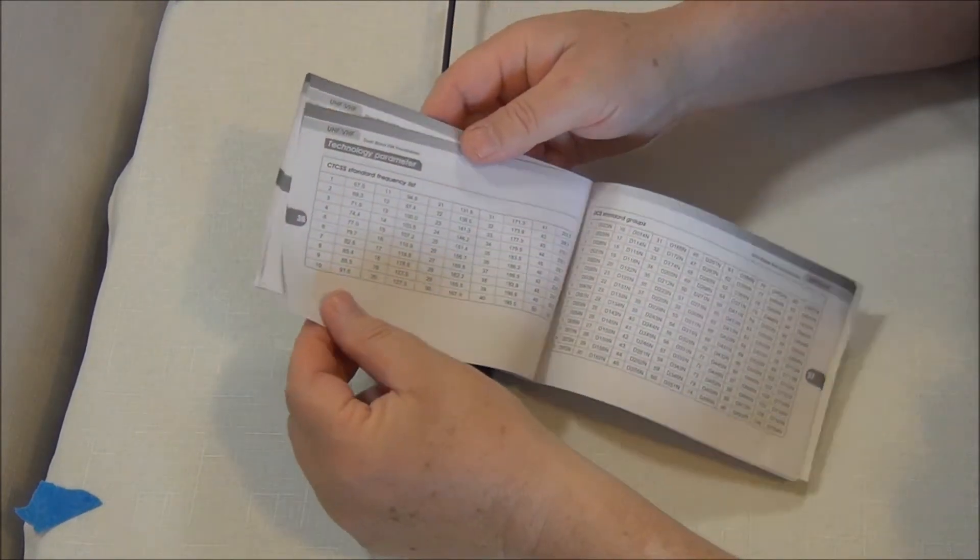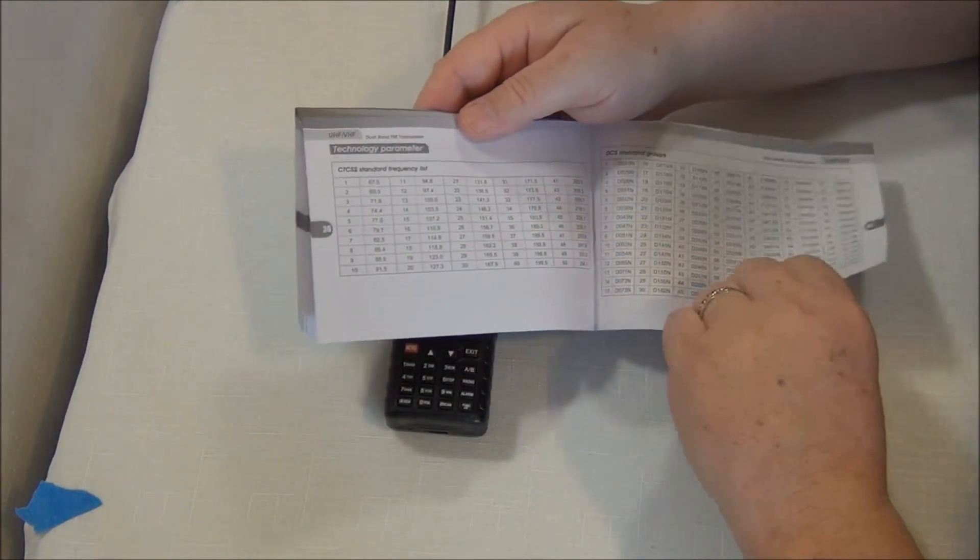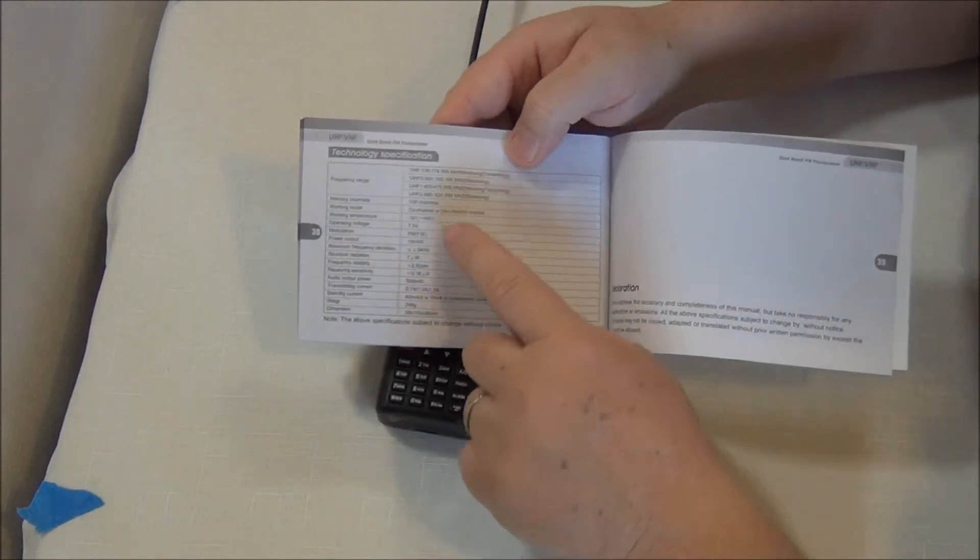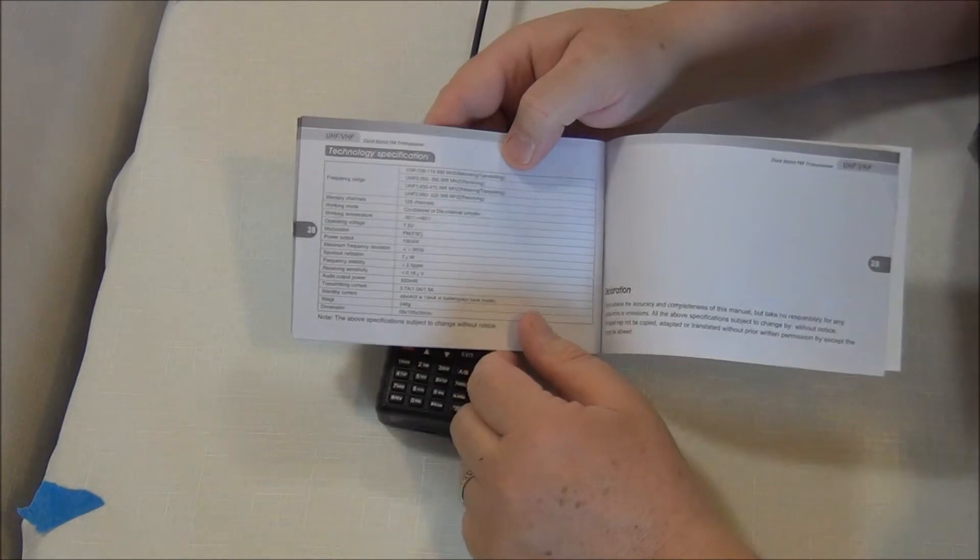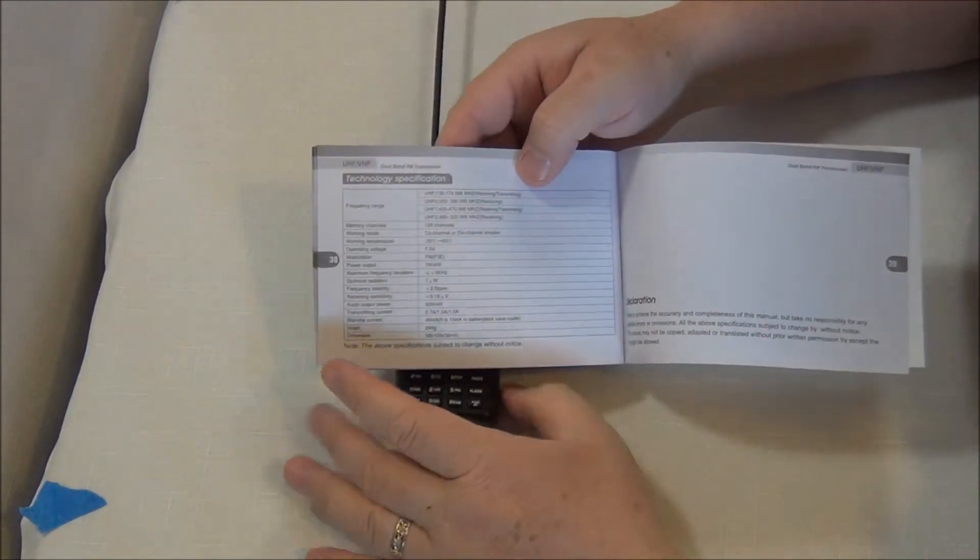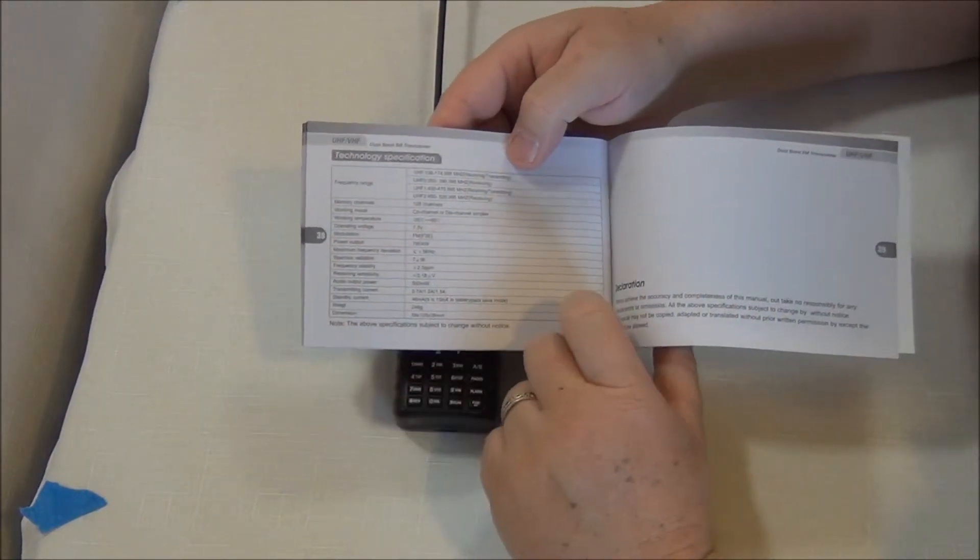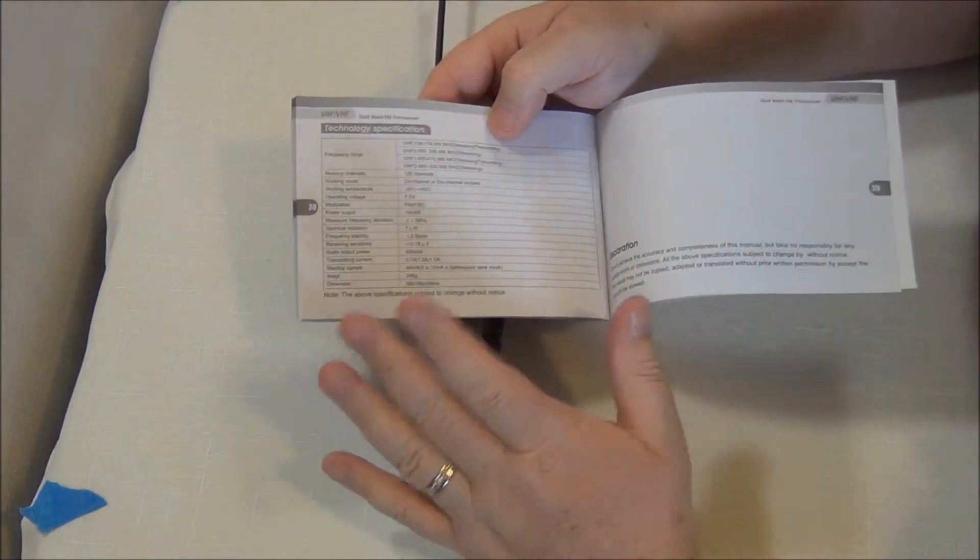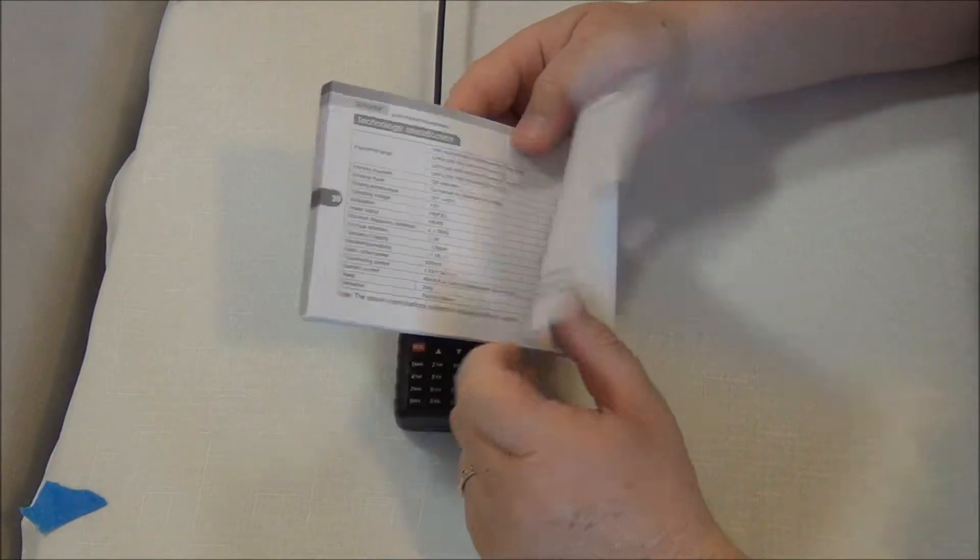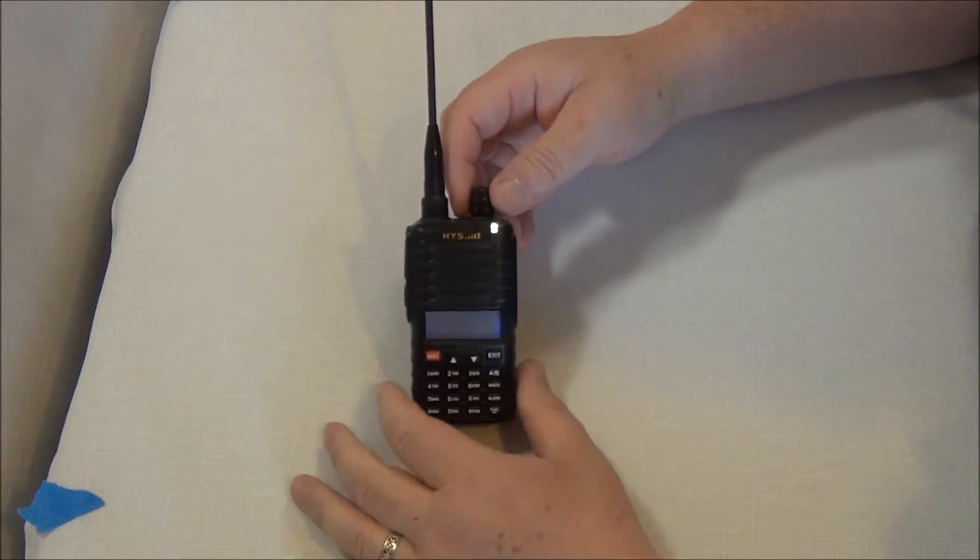That does give you a brief overview of the specifications here in the back of the book. It tells you what your squelch tones are, your DTS DCS tones. Here's some very basic information on the different frequency ranges it'll do, how many memory channels you have, your output power. This is of course FM, one watt and four watts. As you saw that transmit power you had a high low. One watt would be low, four watt would be high.